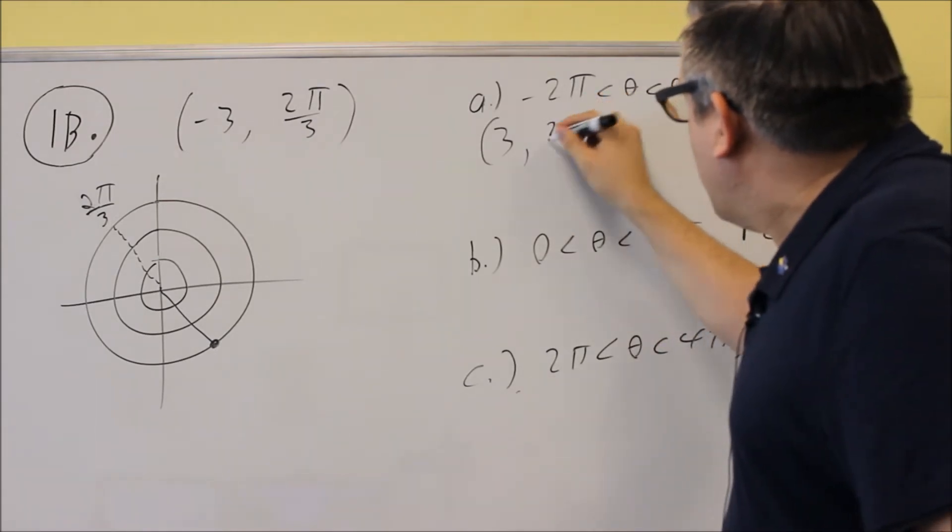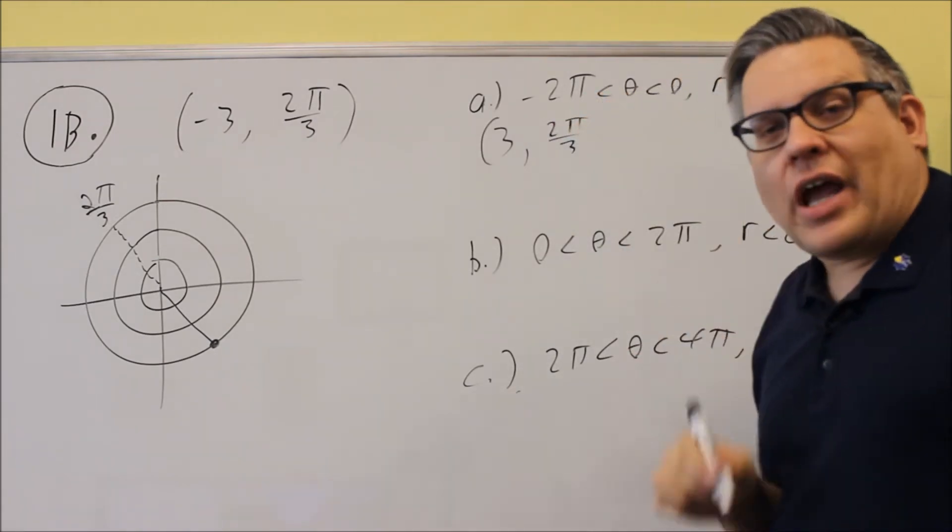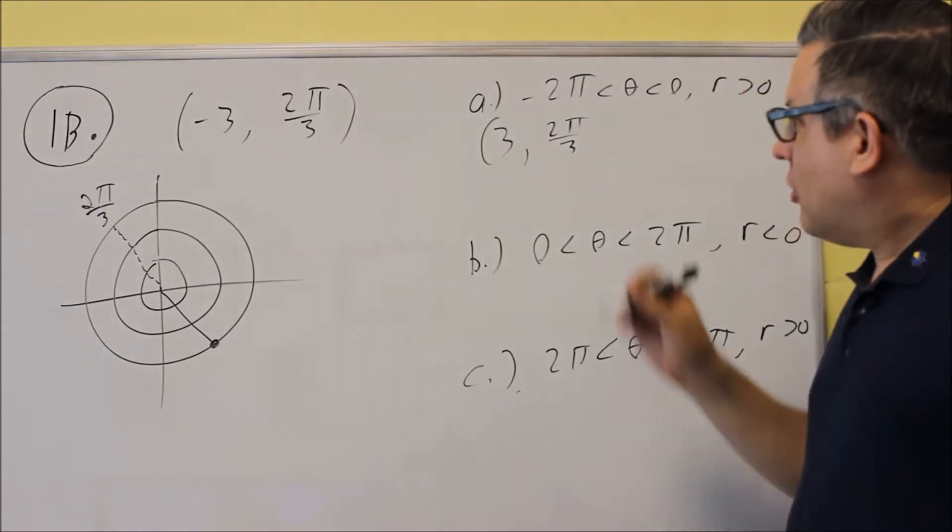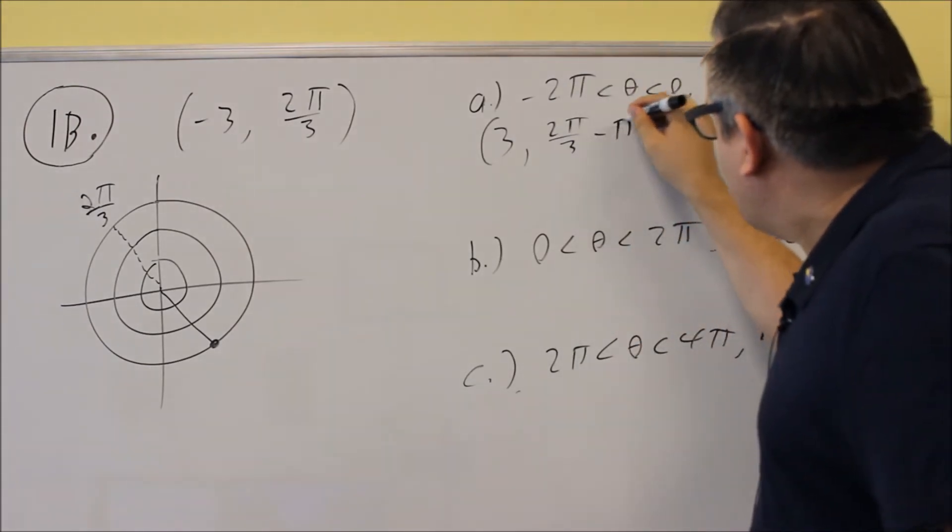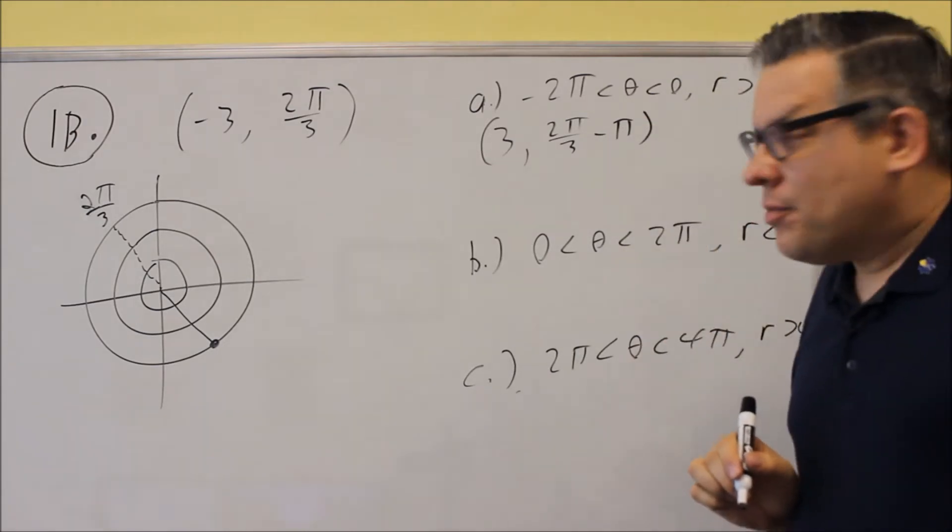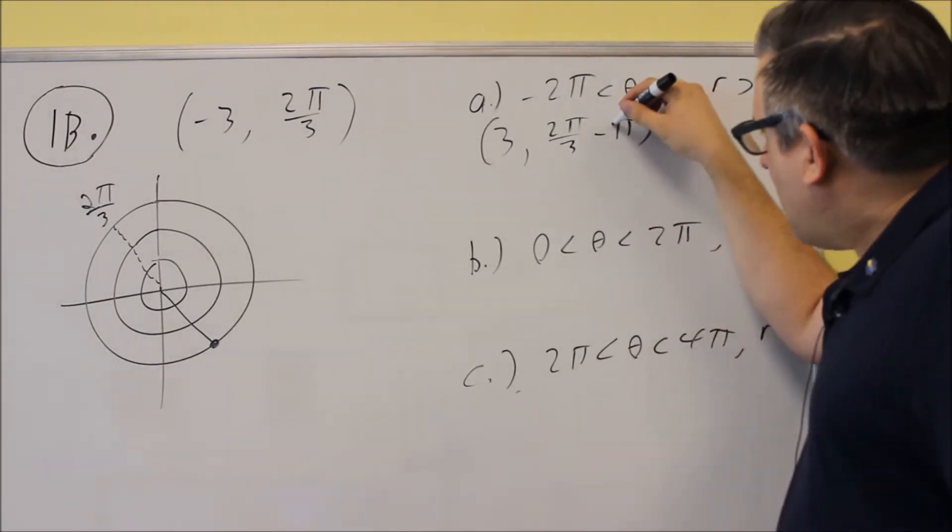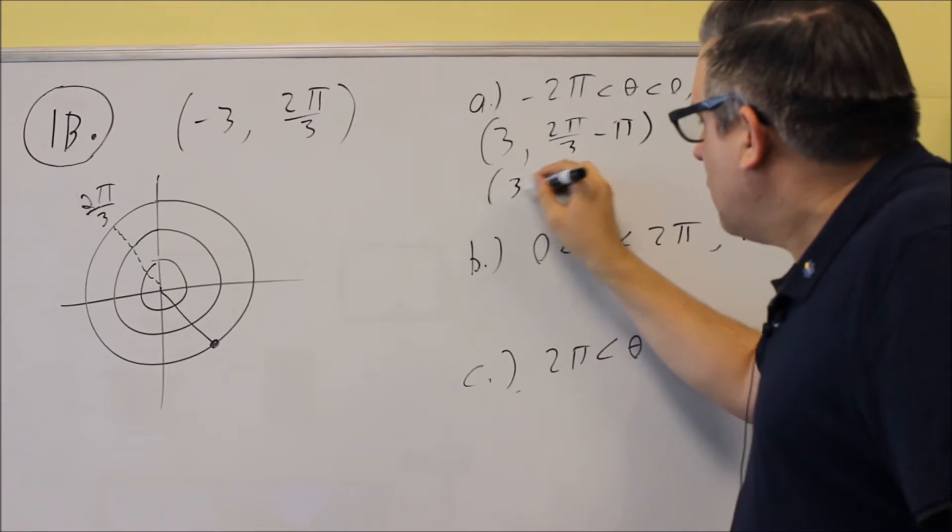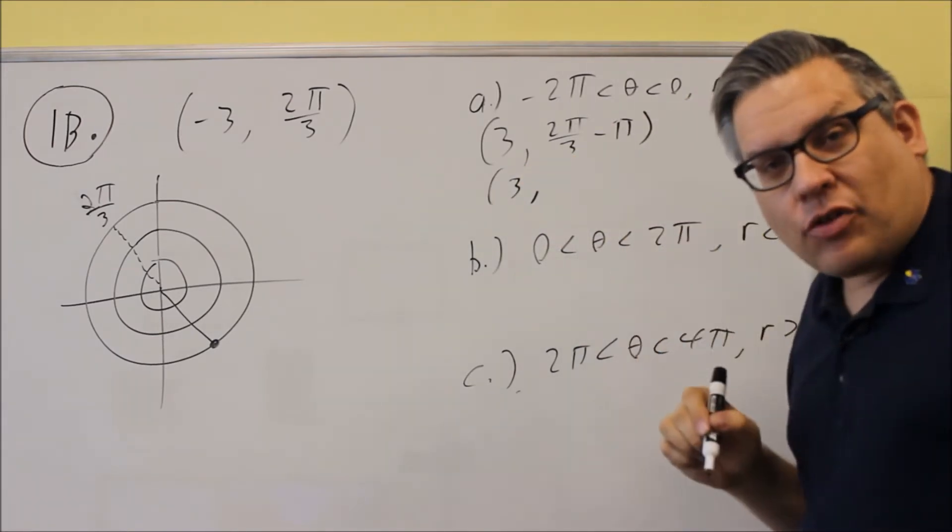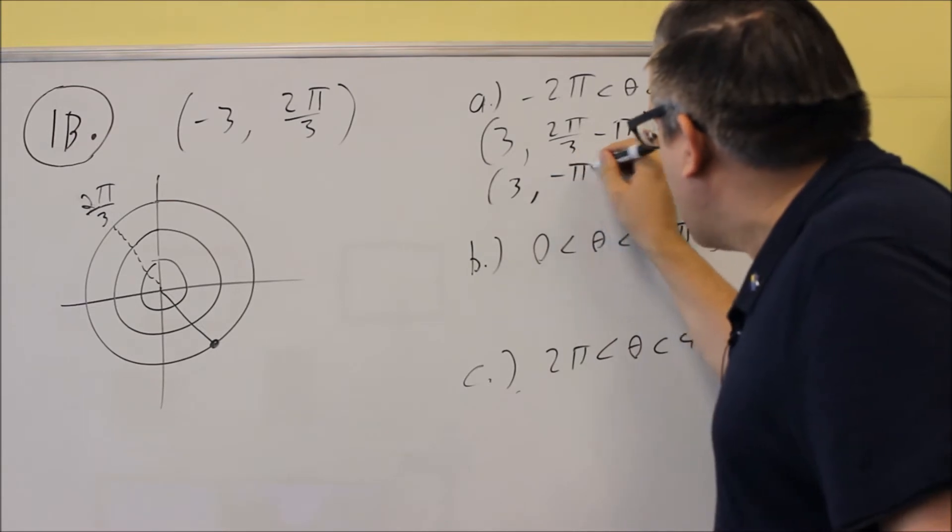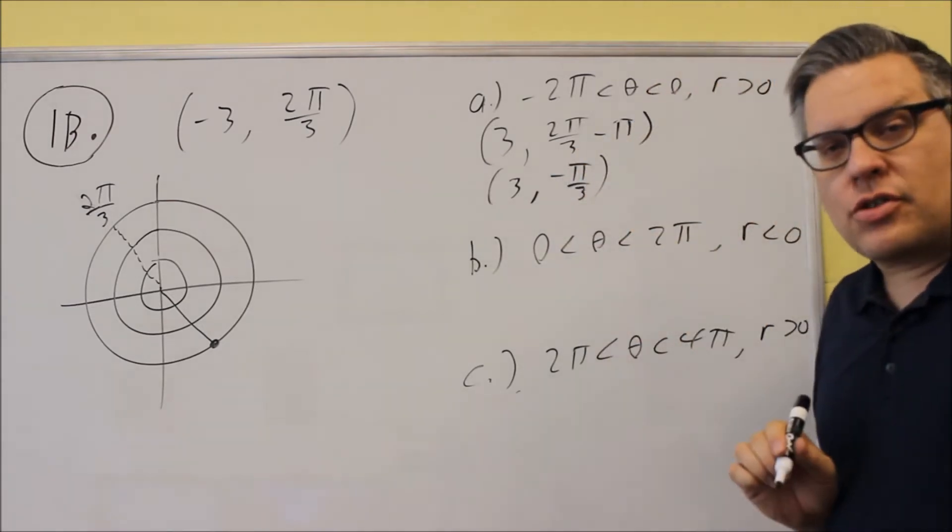You start with 2π over 3, and you can choose to either add or subtract 180, but since we need to have a negative angle, we definitely need to choose subtraction there. So now we just have to subtract this by using common denominators, and that's going to be 2π over 3 minus 3π over 3. When you subtract that, you'll get negative π over 3, and that's going to be your answer.